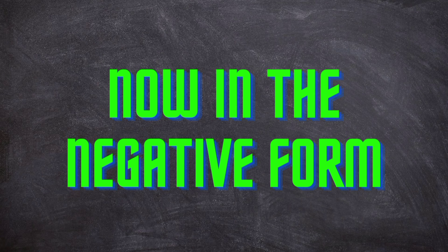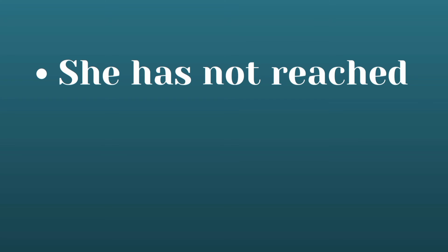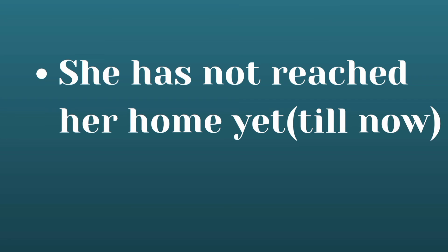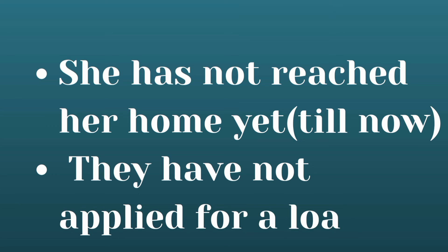Now in the negative form, we use: Subject + has not / have not + third form of the verb + object. For example: 'She has not reached her home yet' — yet means till now. 'They have not applied for a loan till now' or yet.